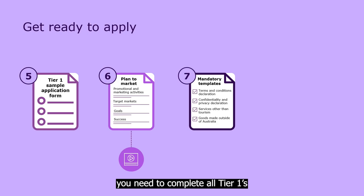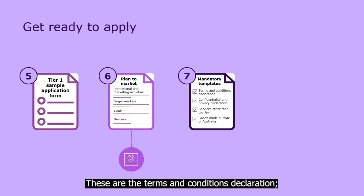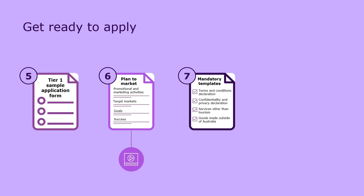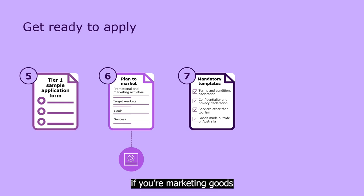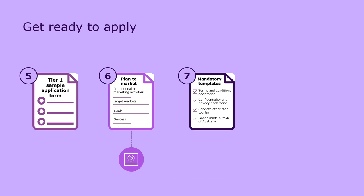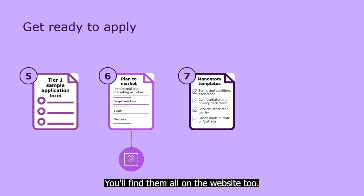For step seven, you need to complete all Tier 1's mandatory templates and reading. These are the Terms and Conditions Declaration, Confidentiality and Privacy Declaration, the Services Other Than Tourism Attachment if you sell services, and the Goods Made Outside of Australia Attachment if you're marketing goods made outside of the country. You'll find them all on the website too.